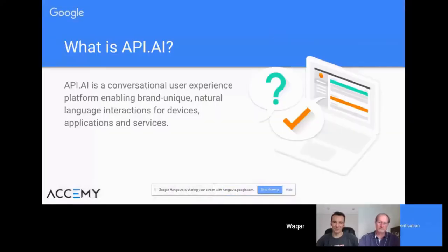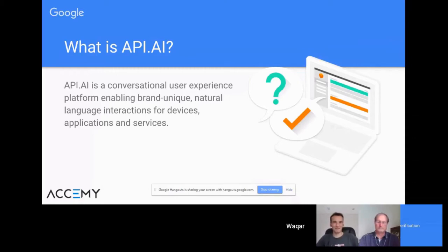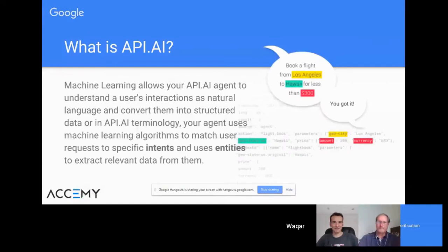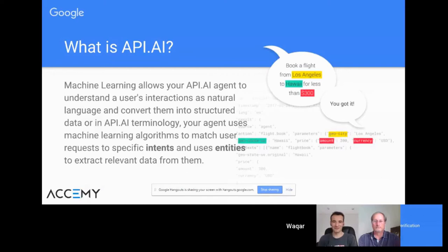So what is API.ai? API.ai is basically a conversational user experience platform by Google, which enables brand-unique natural language interactions for devices like Google Home Assistant, or you can make applications and services using this platform. Machine learning allows your API.ai agent to understand a user's interaction as natural language and convert it into structured data. Your agent uses machine learning algorithms to match user requests to specific intents, automatically matching what the user wants to say and extracting entities and relevant data from the user input.